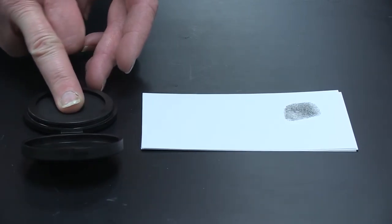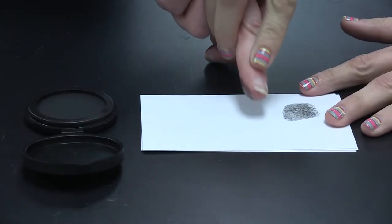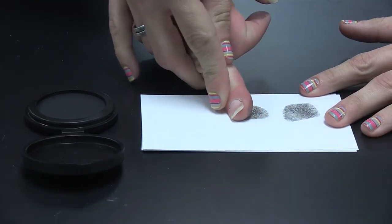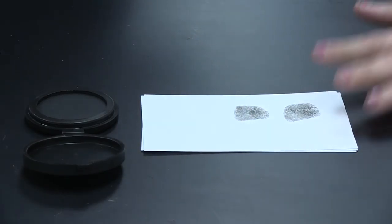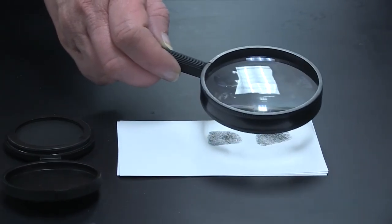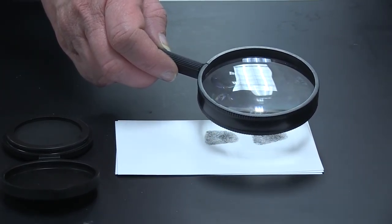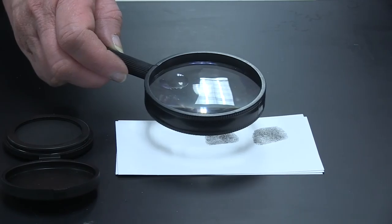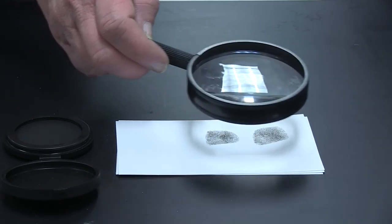And then you'll repeat that measure for the other fingers. And then at that point, you can take a look at the fingerprints and tell whether there are arches or whorls or loops.